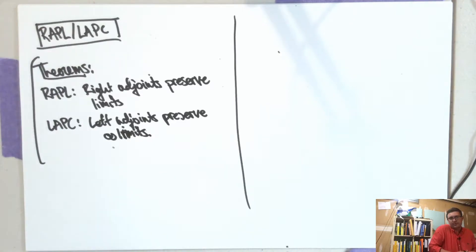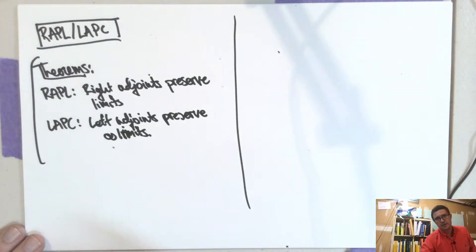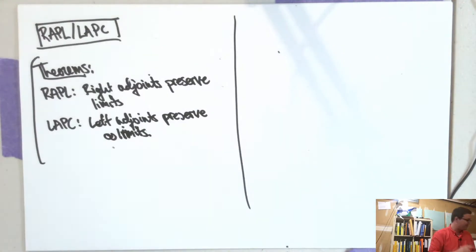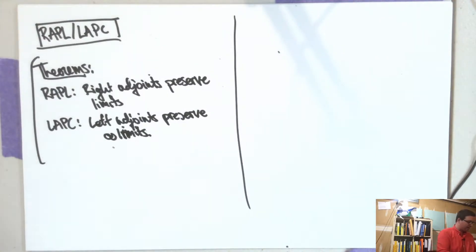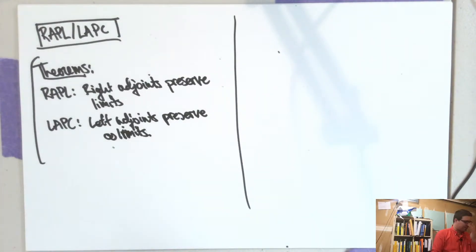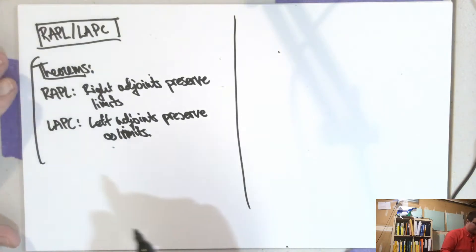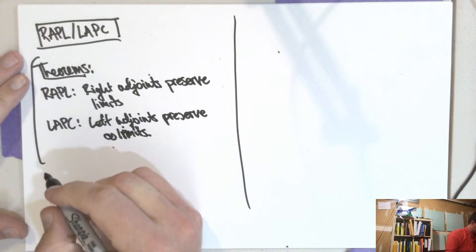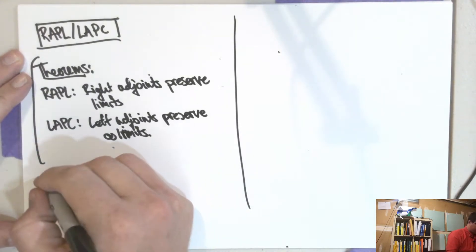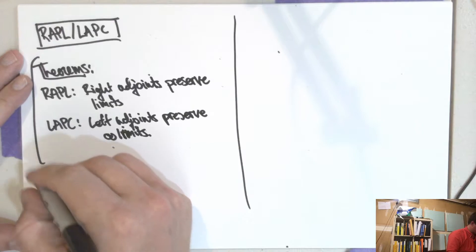It turns out the category of topological spaces has all limits, and there are two things that you need to check. That's a convenient way to check when a category has all limits and co-limits.